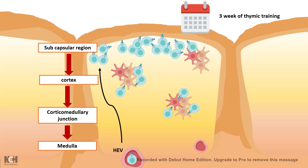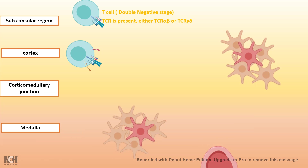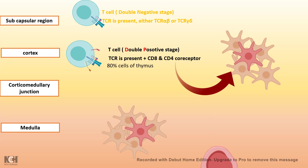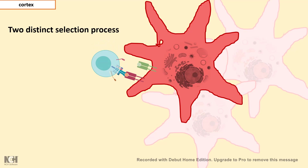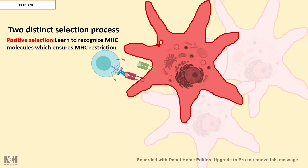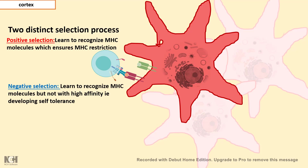This training period lasts almost three weeks, during which T cells undergo several rounds of screening, and almost 90% of them don't make it. First, they have a double negative stage where they don't have any co-receptor — no CD8 or CD4 — only some aspects of the T-cell receptor. They then transit to a double positive stage where they have both CD8 and CD4 co-receptors simultaneously. About 80% of these cells then undergo the processes of positive and negative selection. Positive selection ensures that the T cell can recognize MHC molecules; otherwise they die by neglect.